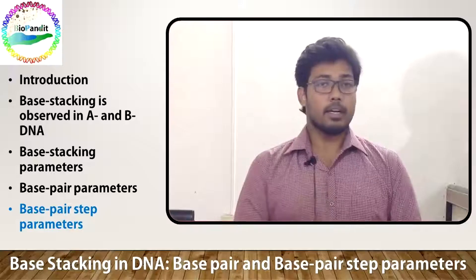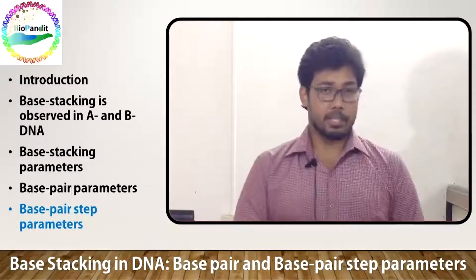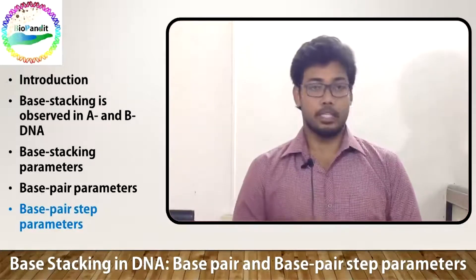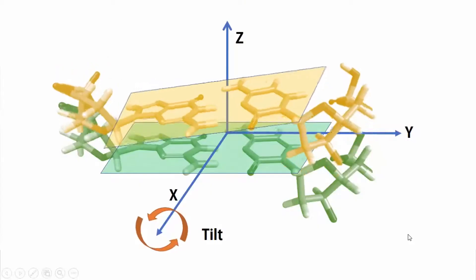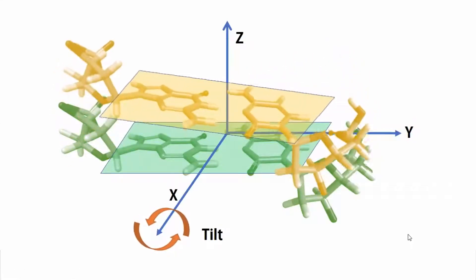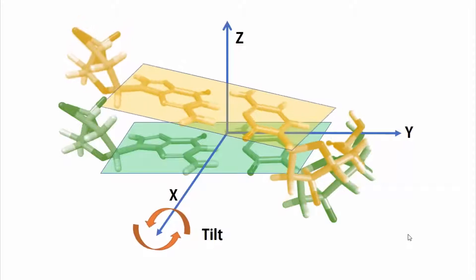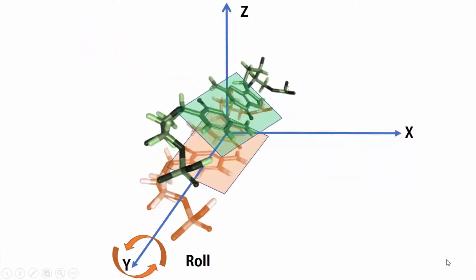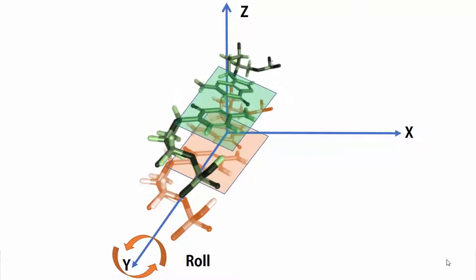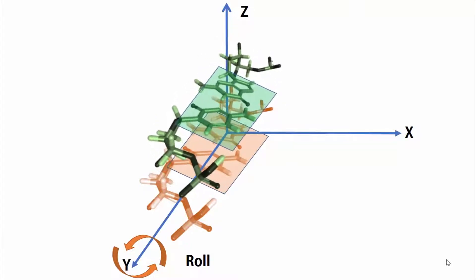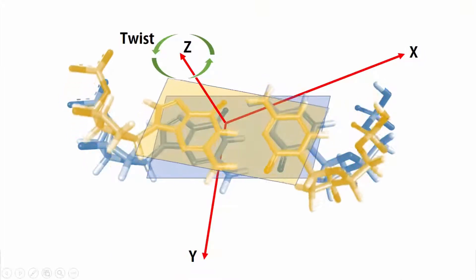Here are the three base pair step parameters that consider rotational deviations from ideal geometry. The rotation along the x-axis is called tilt, the rotation along the y-axis is called roll, and the rotation along the z-axis is called twist.